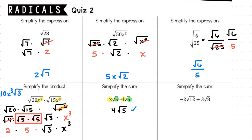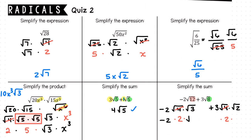In the last question, it asks to simplify the sum. I have negative 2 times the square root of 12, plus 3 times the square root of 8. Since the square root of 12 and the square root of 8 are not like terms, I'll need to simplify them as much as possible. I can write 12 as 4 times 3, and 8 as 4 times 2. The square root of 4 is a perfect square; I can simplify that in each term. Next, I'll multiply all of my remaining factors: negative 2 times 2 is negative 4, giving negative 4 times the square root of 3, plus 3 times 2 times the square root of 2, or 6 times the square root of 2. Since the square root of 3 and the square root of 2 are not like terms, I cannot combine any further.